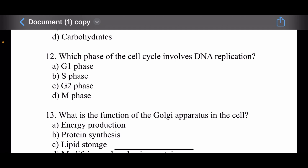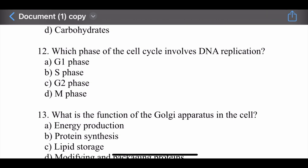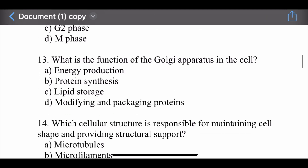Question number twelve: Which phase of the cell cycle involves DNA replication? Options are: G1 phase, S phase, G2 phase, and M phase. The right option is S phase. The S phase involves DNA replication.